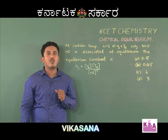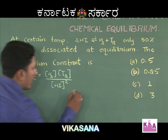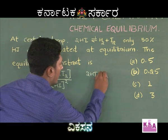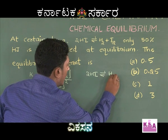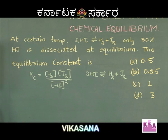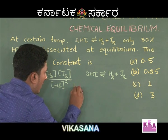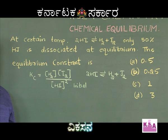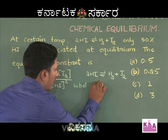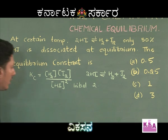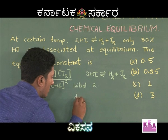How do we find the equilibrium concentration? Consider the equation: 2HI in equilibrium with H₂ plus I₂. Let the initial number of moles of HI taken be 2. Then according to the equation, 50% of HI undergoes dissociation — that is the amount dissociated.